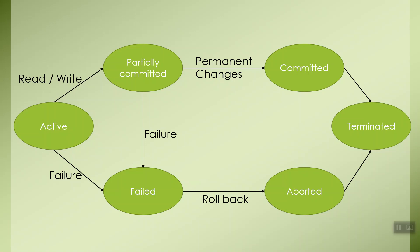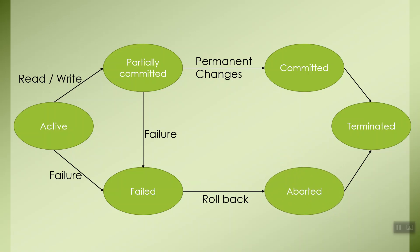After the transaction has rolled back completely, it enters into the aborted state. That means all the changes have been undone. After aborting the transaction, the data recovery model will select one of the following two operations: either it will restart the transaction once again, or it might kill the transaction entirely because there was some logical error in that transaction.